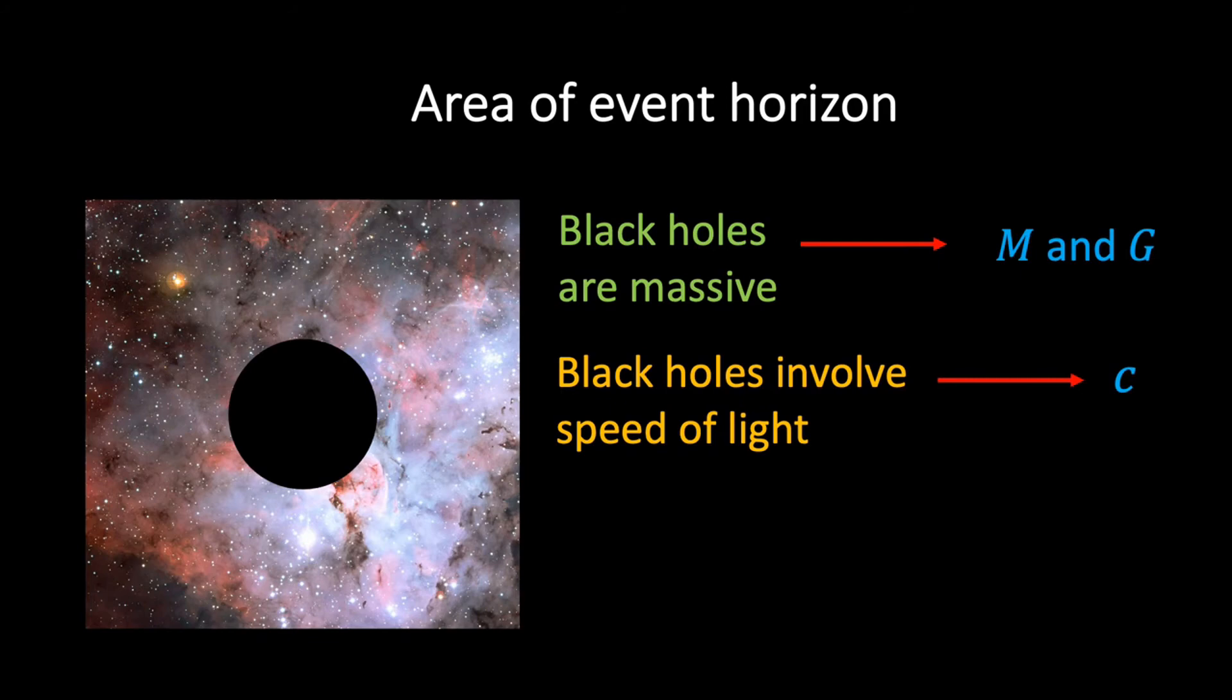Our strategy is to write the area of the event horizon as A equals G to the power alpha times c to the power beta times M to the power gamma. And then we will use dimensional analysis to determine alpha, beta, and gamma.